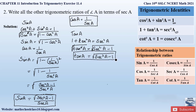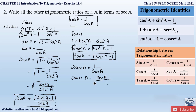Next is cosecant A. Cosecant A equals 1 by sine A, and we have already found the value of sine A. Taking the reciprocal of sine A gives the value of cosecant in terms of secant. So cosecant A = 1/sine A = sec A / √(sec²A − 1). This is the value of cosecant A in terms of secant A.